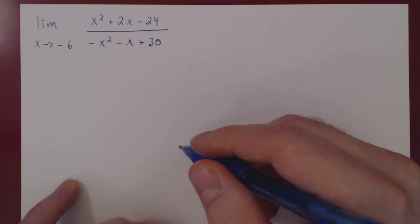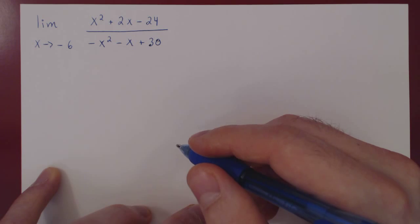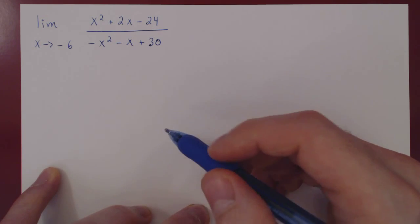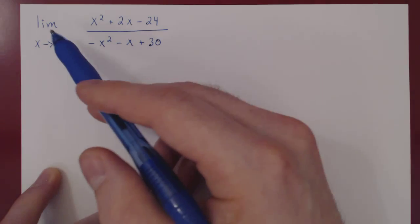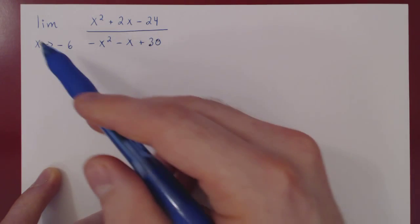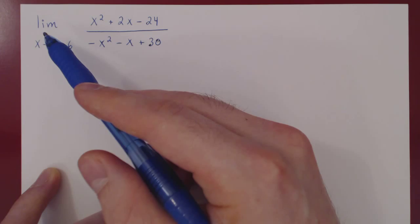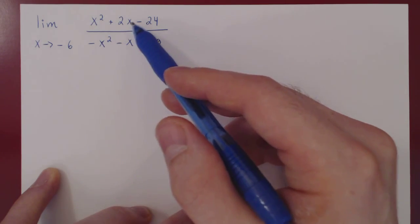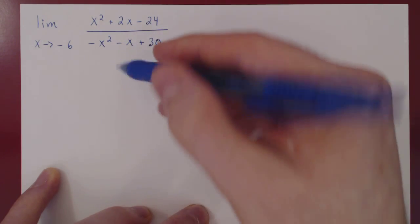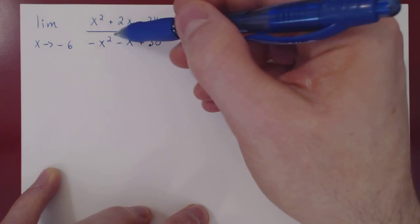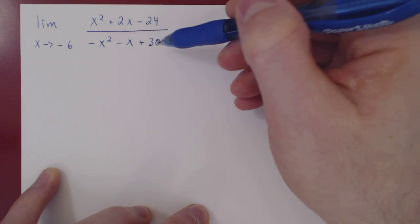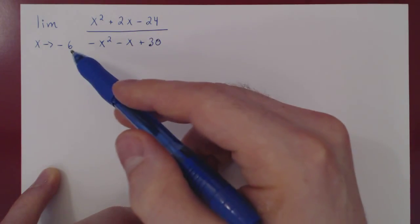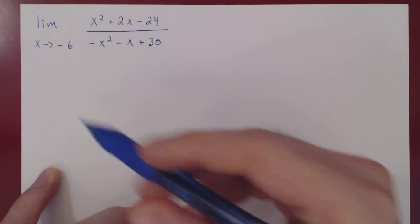In this video, we will look at limits and factoring. Here's the first example: we consider the rational function (x² + 2x - 24) / (-x² - x + 30) as x approaches negative 6.